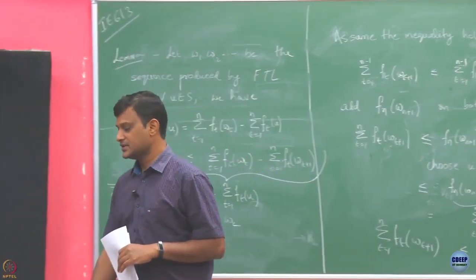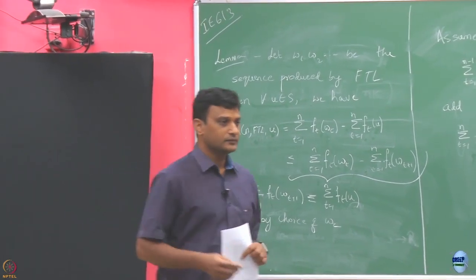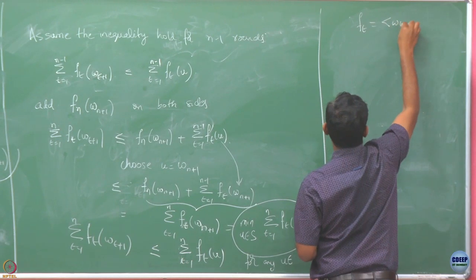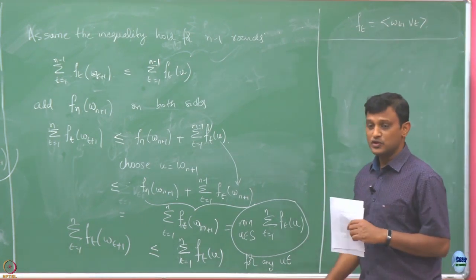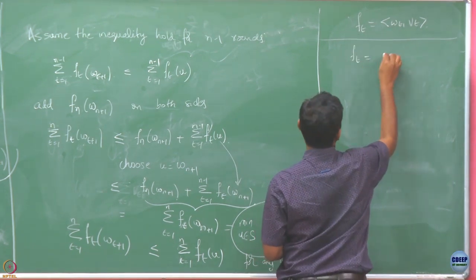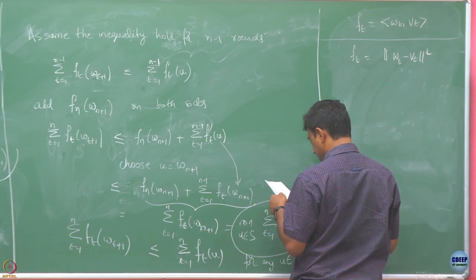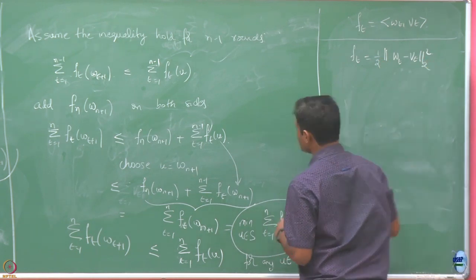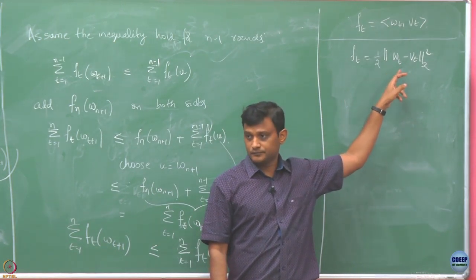Let us compute what happens for a specific convex function. Earlier, one possible convex function we considered is the linear inner product W·V_T. But I will not directly jump to that — instead we will look into a quadratic loss function. We are going to take F_T defined as half the squared L2 norm.